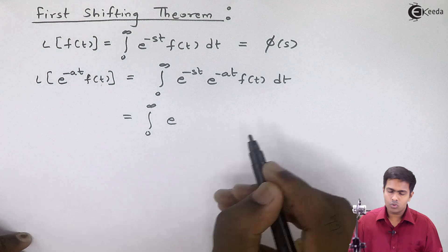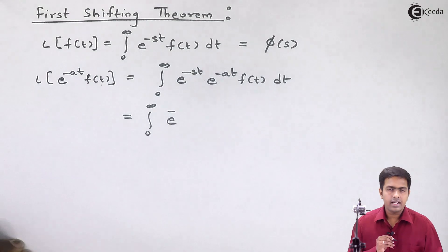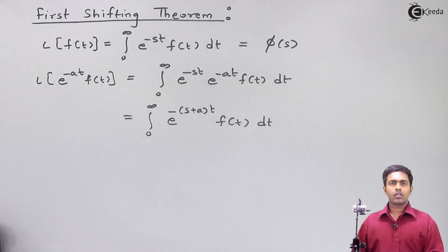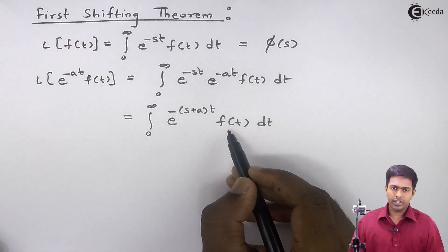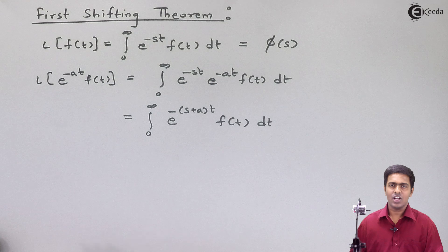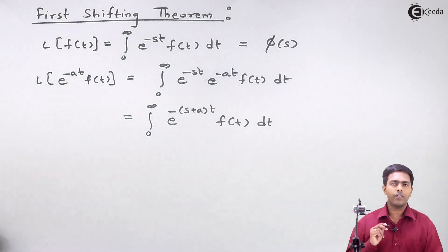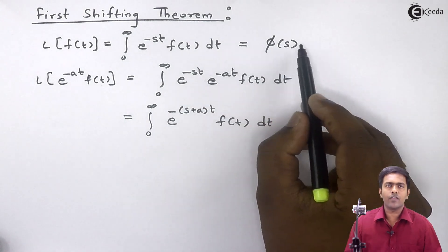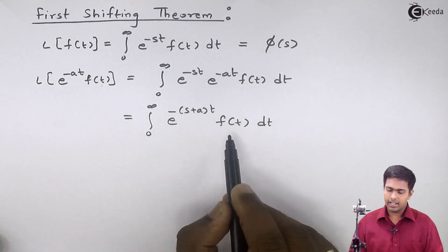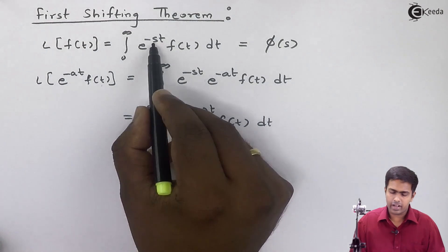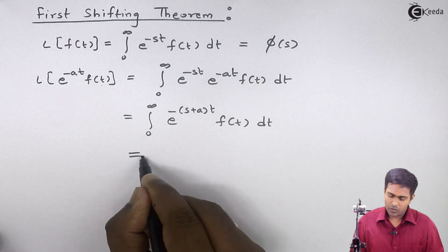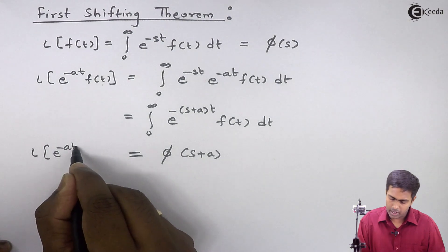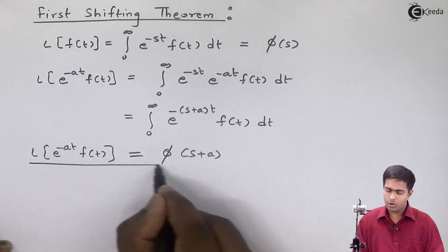Combining the exponents, this becomes the integral from 0 to infinity of e raised to minus (s plus a) times t, multiplied by f(t) dt. Comparing this with the original definition of Laplace transform, where s denotes the constant giving phi of s, we see this integration is identical except s is replaced by s plus a. Therefore, the Laplace transform of e raised to minus at times f(t) equals phi of s plus a.